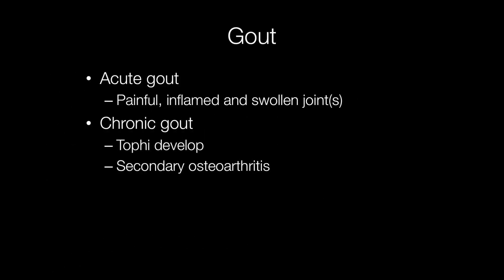In acute gout, the affected joint is exquisitely painful, inflamed, and swollen. When gout becomes chronic, tophi develop in sites such as the pinna, and repeated episodes of acute gout in the joints can result in secondary osteoarthritis.